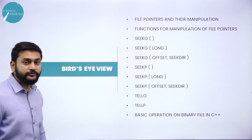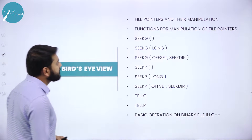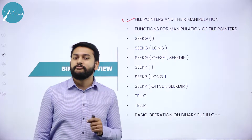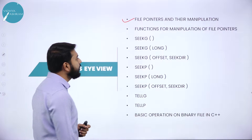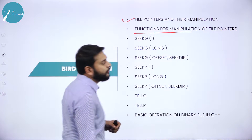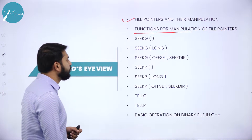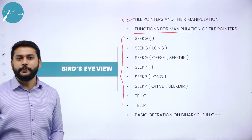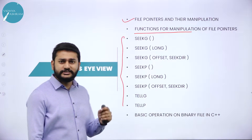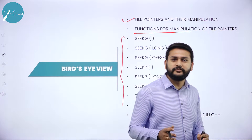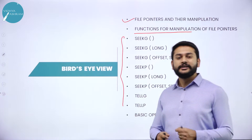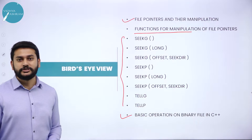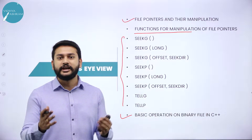So what do I have in this session? I will be starting with the concept of file pointers — what are the different file pointers in file handling. Along with that, I will discuss the functions for manipulation of file pointers. The important part of this session is: what is seekg, what is seekp, what is tellg, and how we use seek and tell with get and put functions. I will also discuss basic operations on binary files in C++.